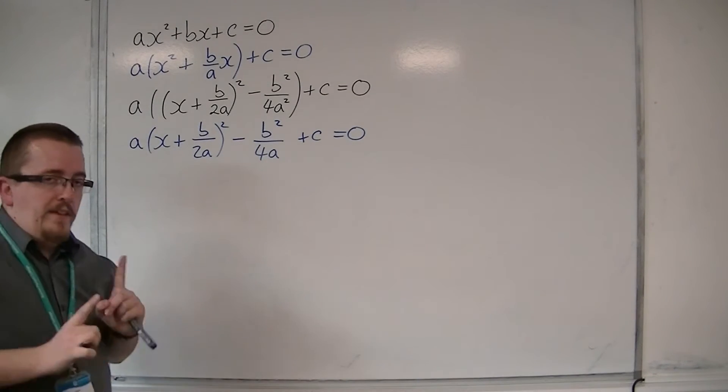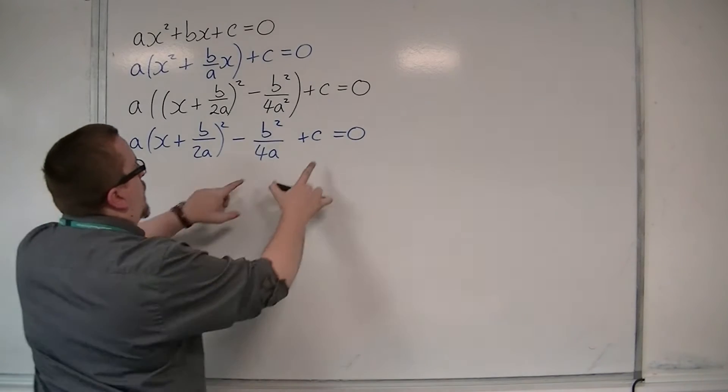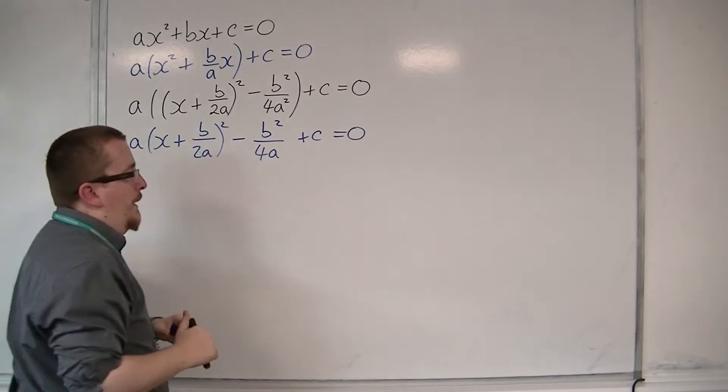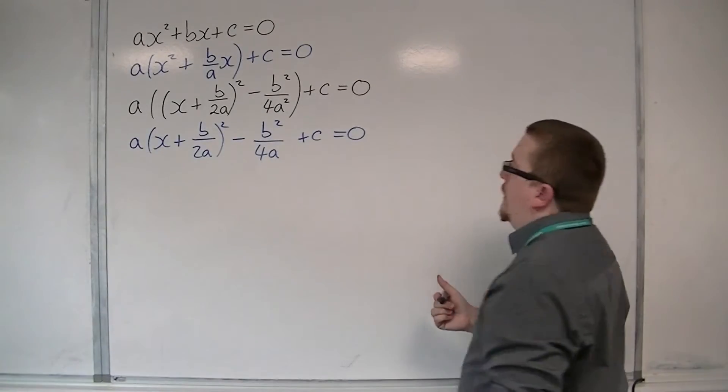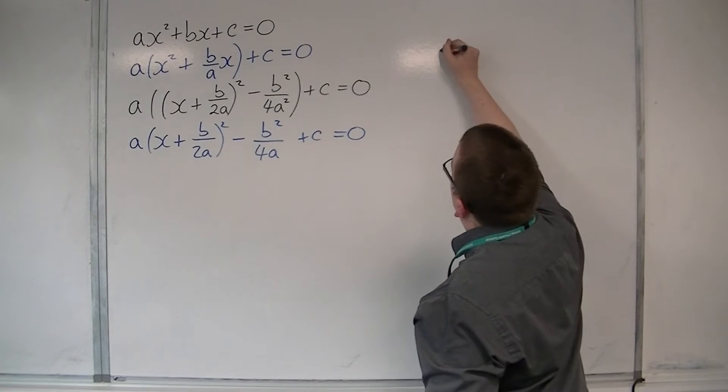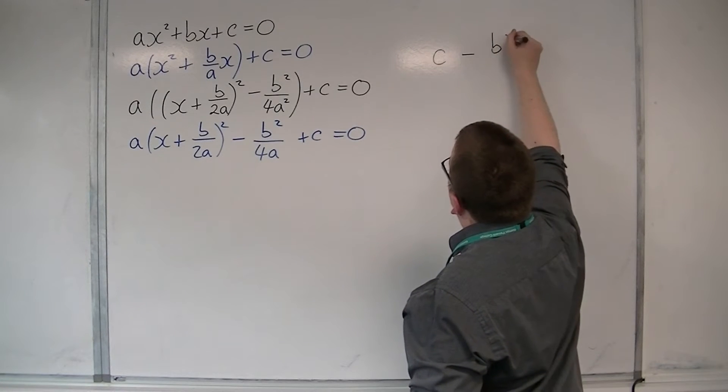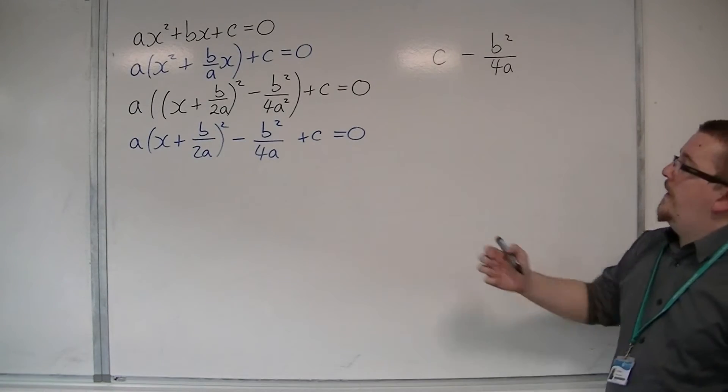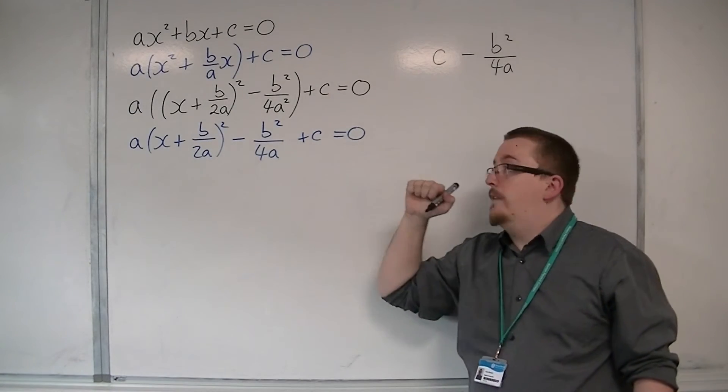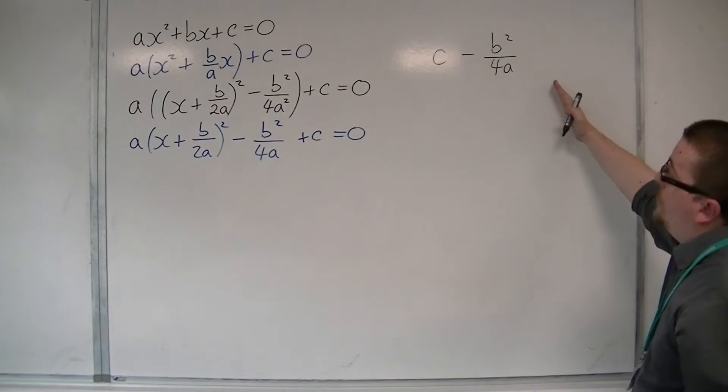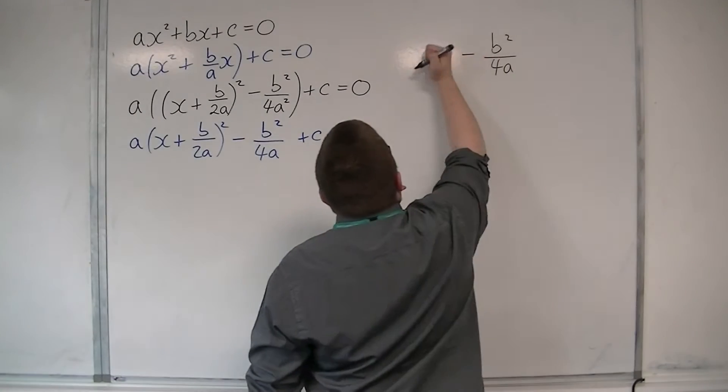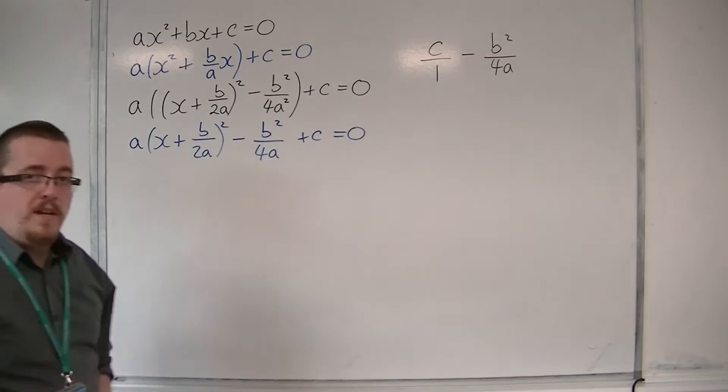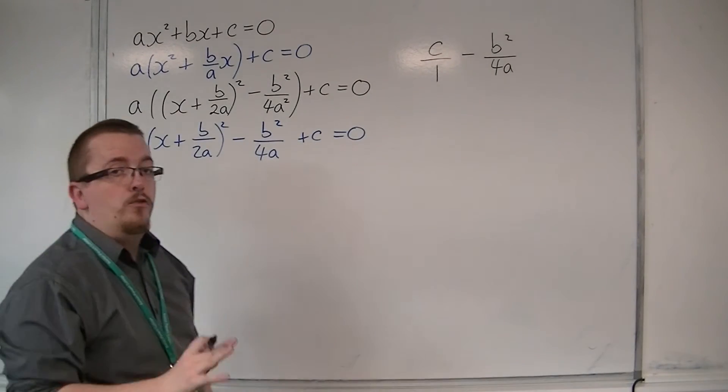The next thing to do is we want to be able to simplify these two terms. So what I'm going to do is I'm going to write them this way round. Instead of having minus b squared over 4a, I'm going to have plus c. I'm going to write c as c over 1. And now I'm going to add fractions using cross multiplication.